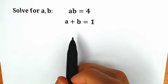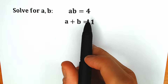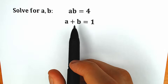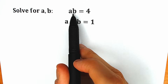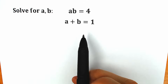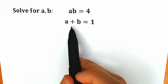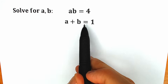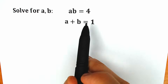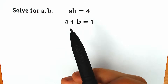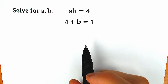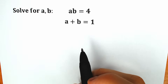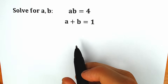Hello everyone, welcome back to my channel. Today we have a very interesting algebra question. We know that the product a times b equals 4 and a plus b equals 1, and we need to find a and b. If you have your solution, you can write it down into the comment section and we will check your answers.